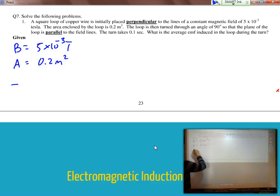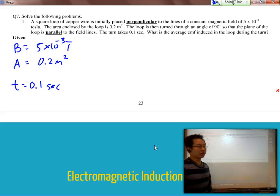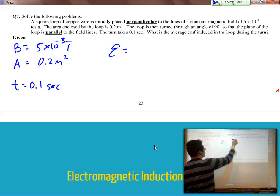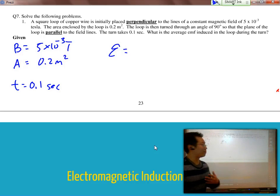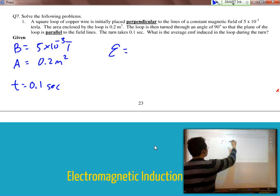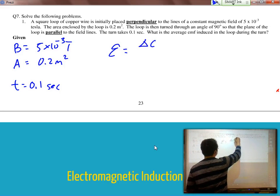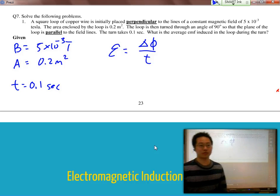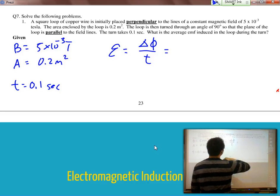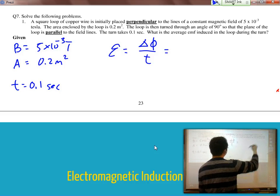And the time that it took was 0.1 seconds. So if I'm looking for the EMF, EMF is equal to... We can leave out the negative sign for now because it's really just a reminder for us about Lenz's Law. But it's equal to the change in flux over time. I'm not going to worry about N because there's only one loop right now.